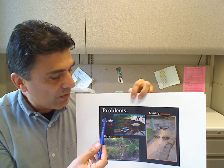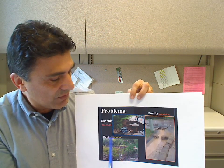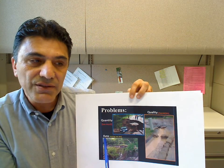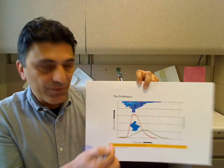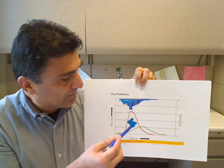So we have a quantity problem, a quality problem, and also too much water moving too fast — the rate problem. These are the three main problems generated by excessive stormwater runoff. And I want to share with you this hydrograph that we talked about.